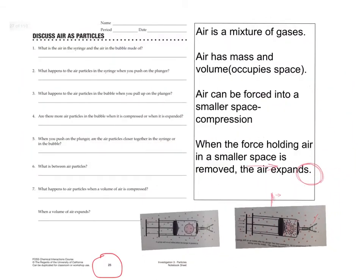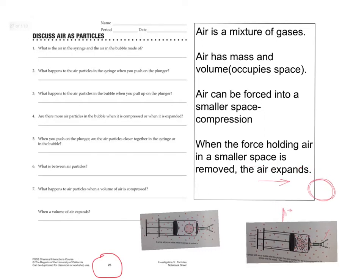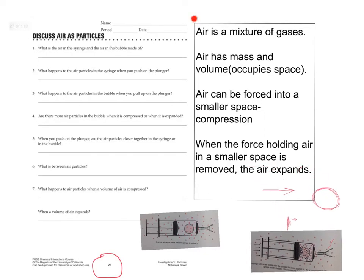The takeaway here is that as you reduce the volume that a gas has, the particles just get closer together. The number of particles does not change. They just get closer together. These are some notes that I feel are important enough for me to have typed down, and I want you to attach these to your notes. Air is a mixture of gas. Air has mass and volume. Air can be forced into a smaller space. That's called compression. And when the force holding air in a smaller space is removed, air expands. These are four important properties about air or gas that you need to have in your spiral notebook.